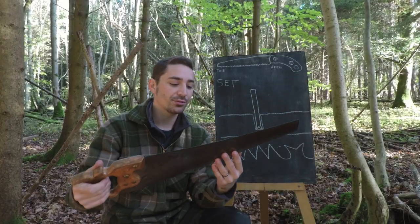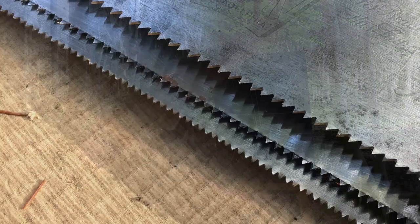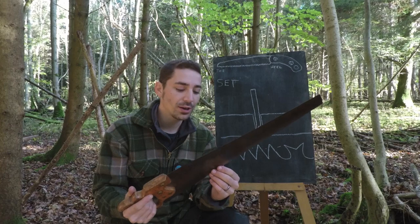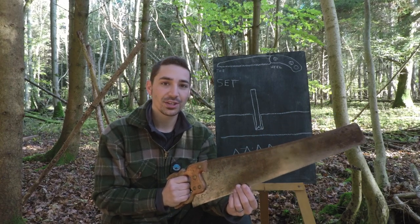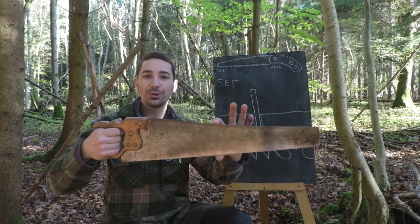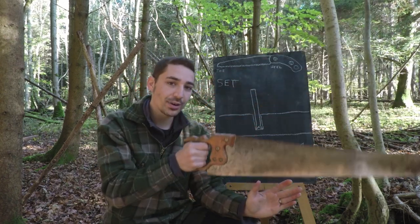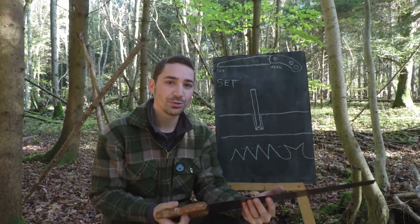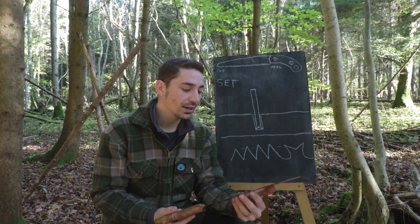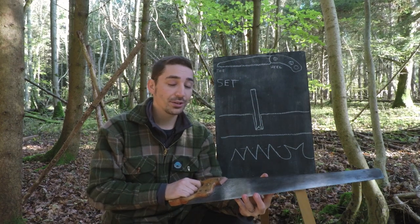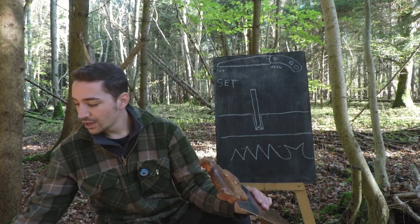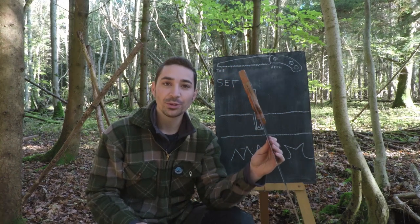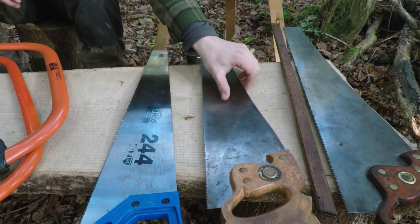If we look at this Taylor Brothers crosscut saw from Adelaide, you can see the teeth are very small and the gullets between them are very small as well. It's not designed to deal with green wood - it's designed for accuracy and precision. You can see a very tall body on the saw, which also aids in going in a straight line through the piece of wood. It's a crosscut saw designed for going across the grain nice and straight - you certainly wouldn't use this for green wood.